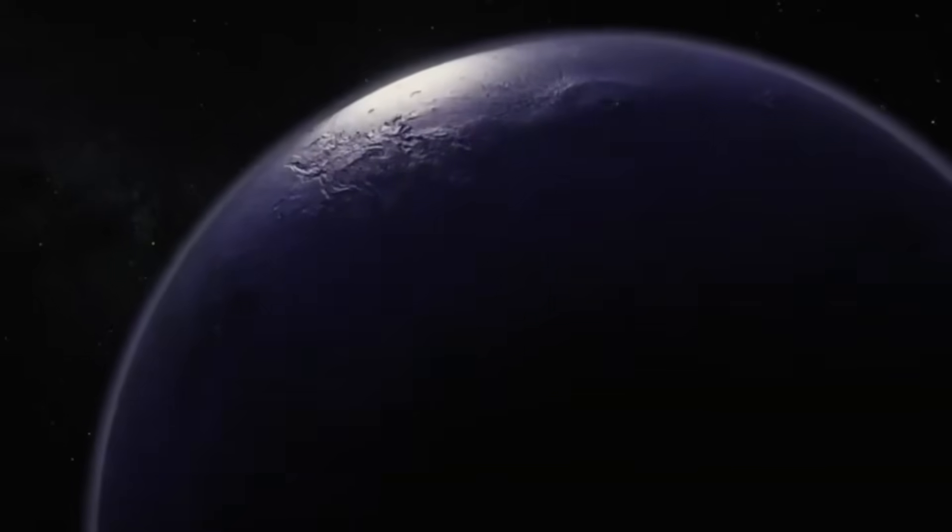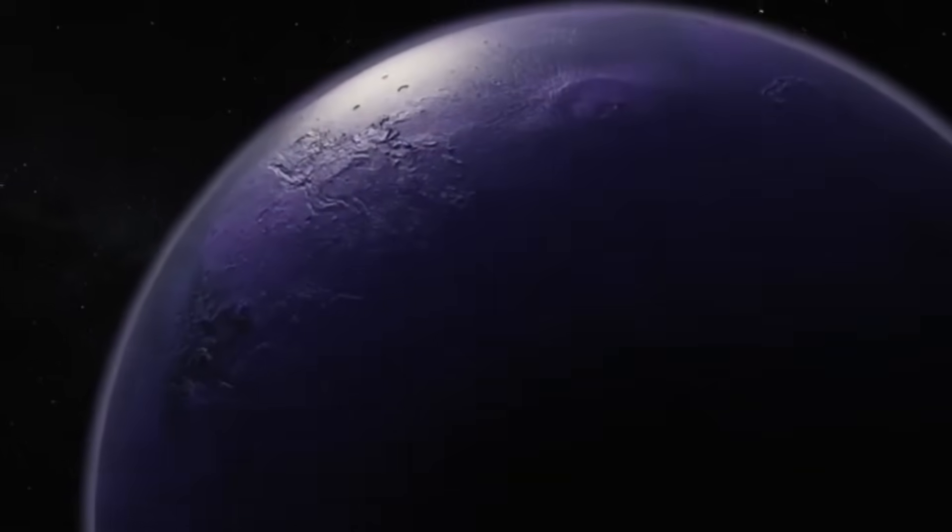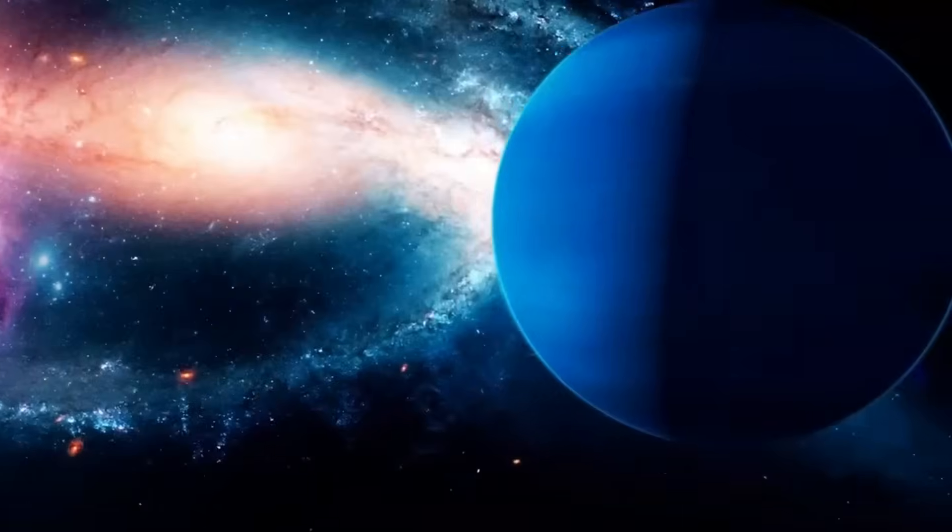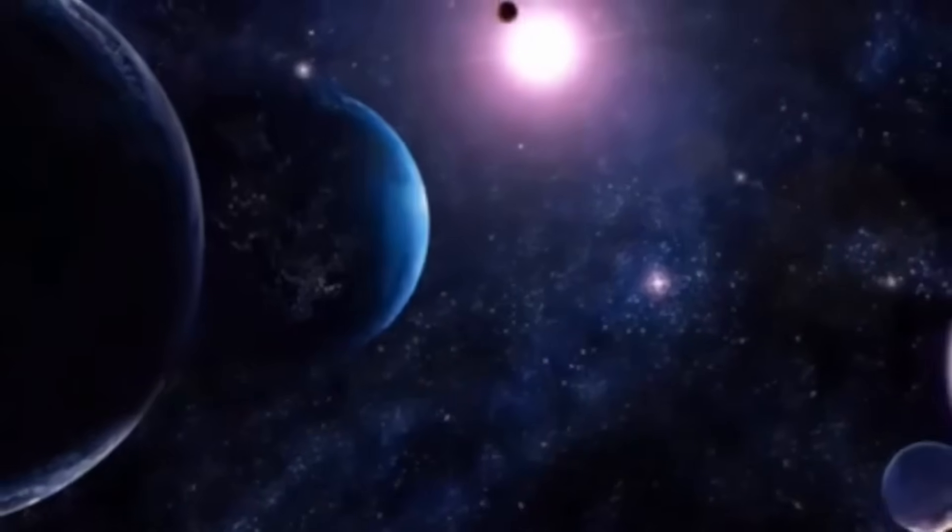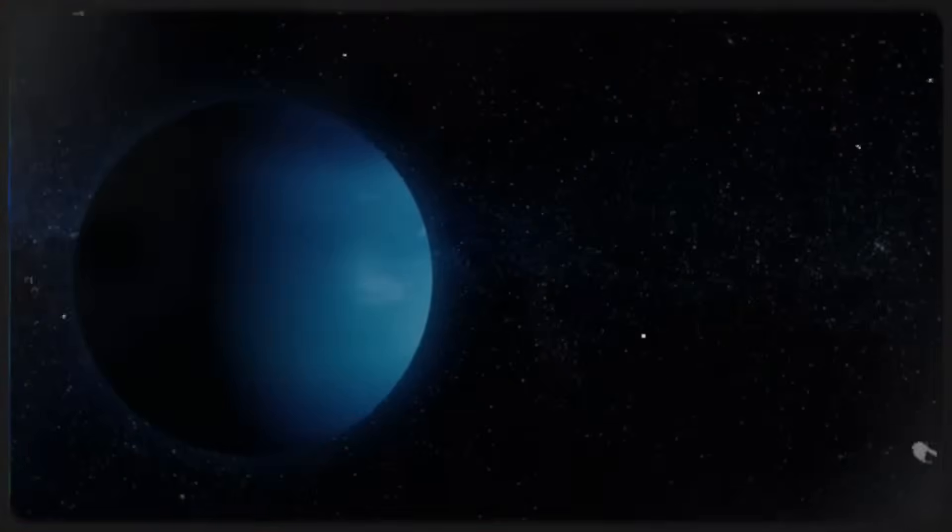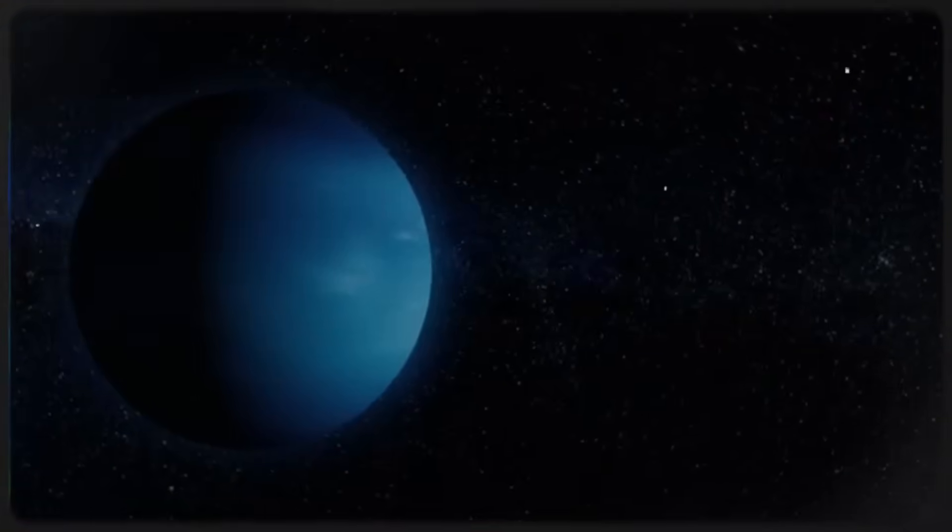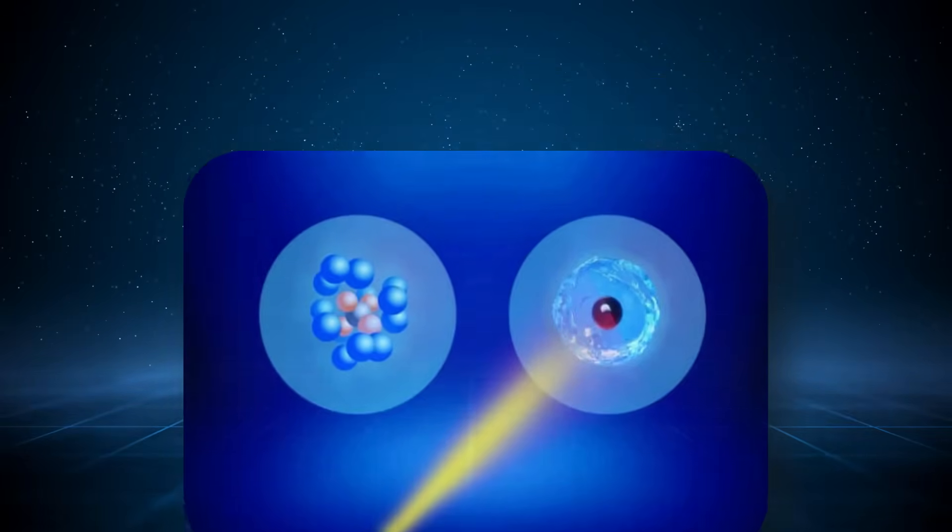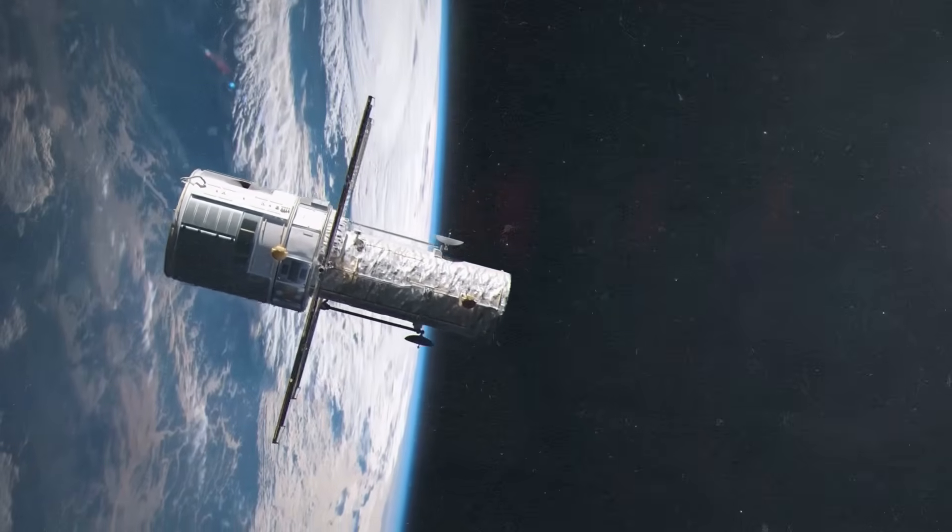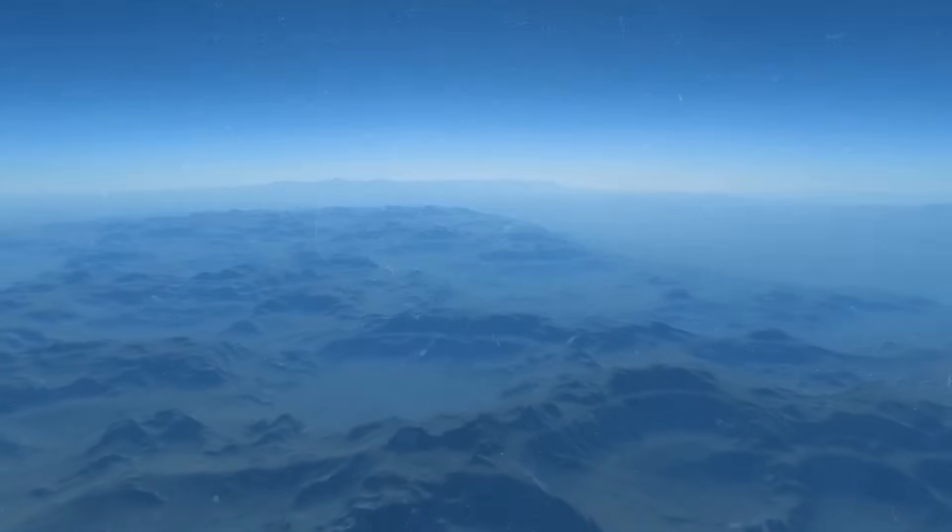Instead of a traditional core surrounded by concentric layers of gas, Neptune might have a highly asymmetric internal dynamo. This kind of magnetic configuration could only arise if the internal flows of conductive material, likely a mixture of water, ammonia, and methane in superionic or plasma states, are shaped by non-uniform densities and dynamic flows more akin to chaotic turbulence than stable layers.